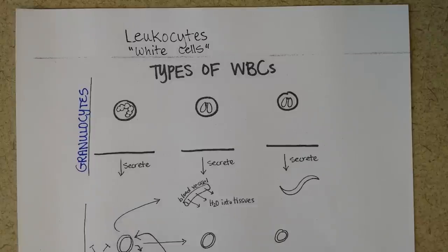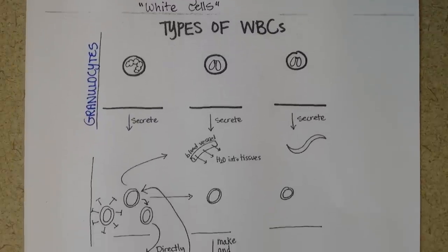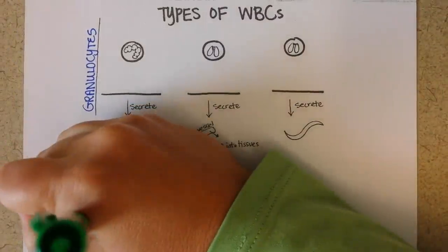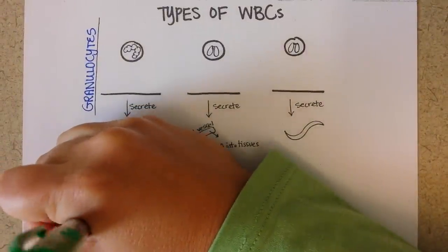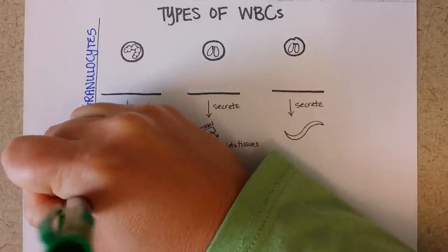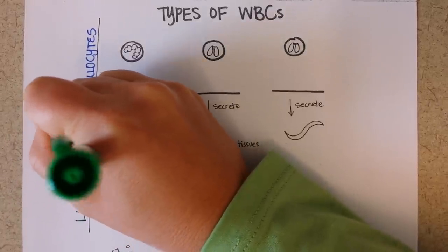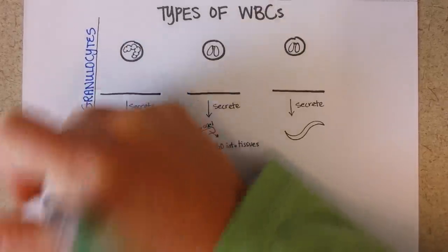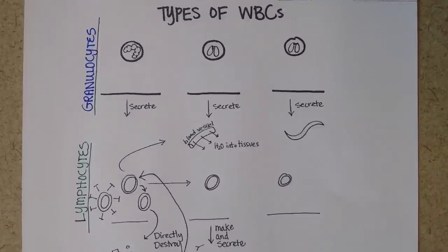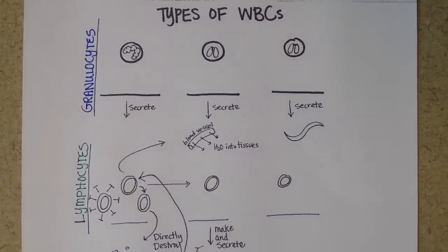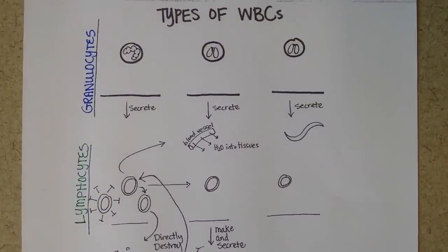The second class are lymphocytes. You can kind of hear in their name that they commonly reside in lymphatic tissue such as lymph nodes, and they mature often in lymphatic tissue as well.